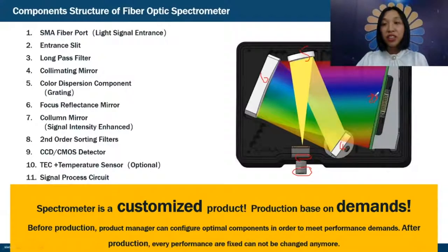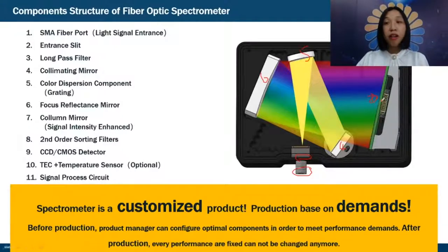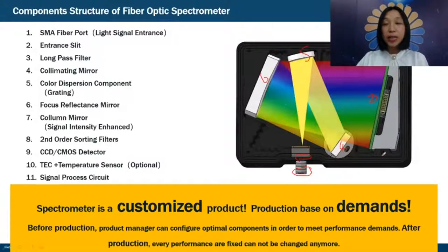If this spectrometer is cooled, you can also have a TEC cooler and temperature sensors. Component eleven — not shown in this picture because it's on the back — is the signal processor circuit board.